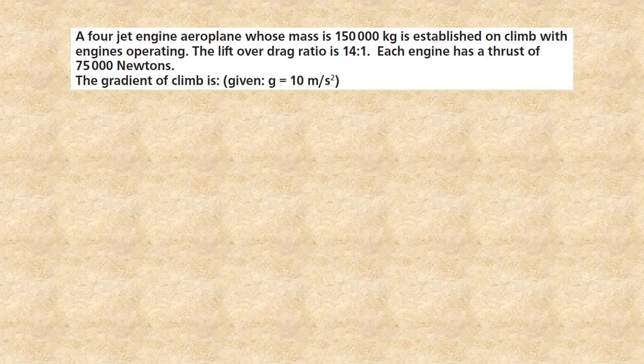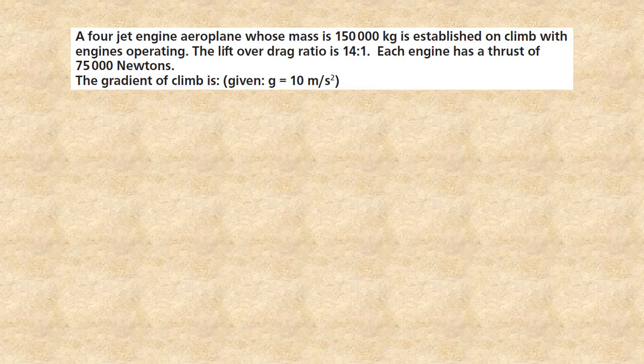A four-engine airplane whose mass is 150,000 kg is established on climb with engines operating. The lift over drag ratio is 14 to 1. Each engine has a thrust of 75,000 N.